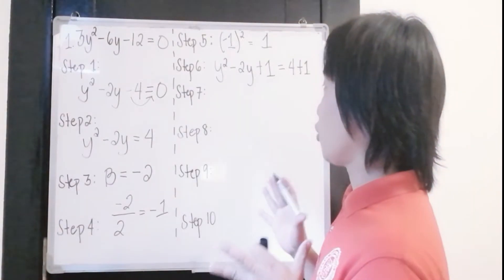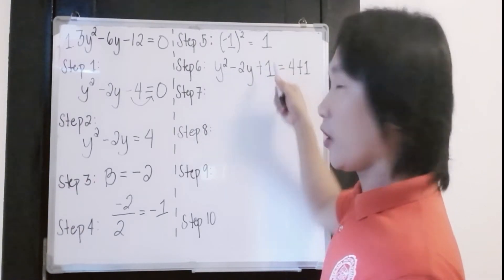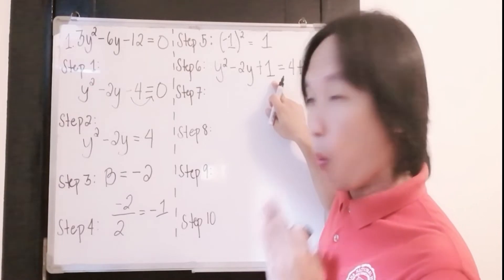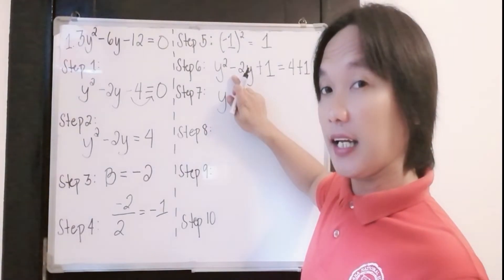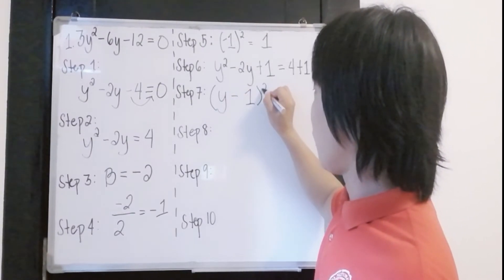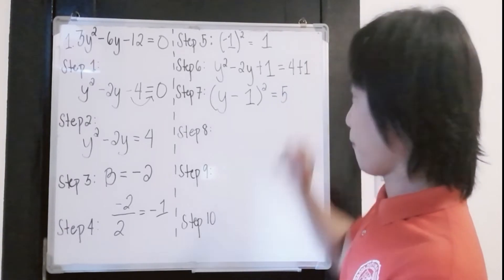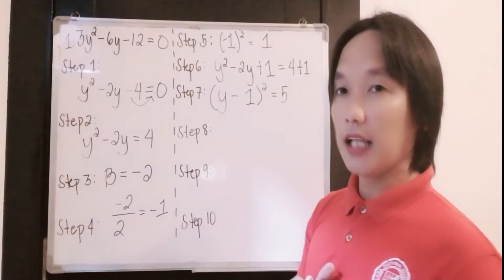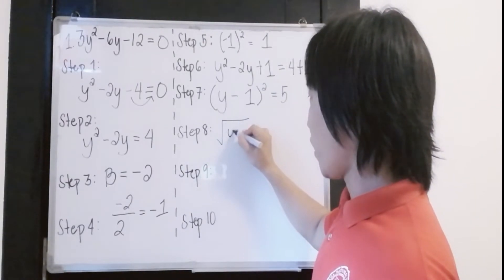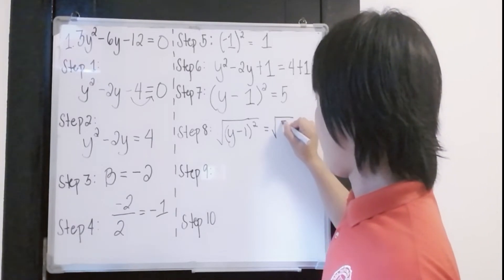Now we simplify our equation. We have y squared minus 2y plus 1. The square root of 1 is just 1, so y minus 1, raised to the power of 2, equals 5 — since 4 plus 1 is 5. Step number 8 is to square root both sides of the equation. So you have the square root of the quantity (y minus 1) squared, and the square root of 5.